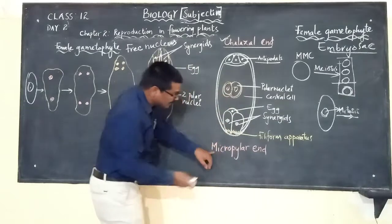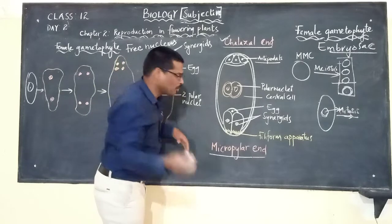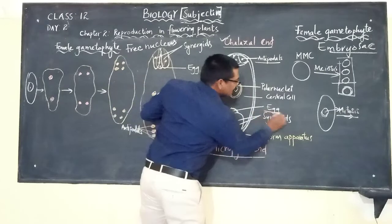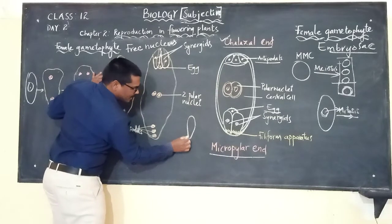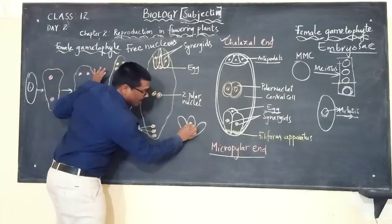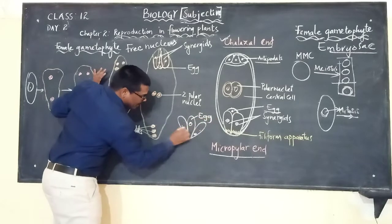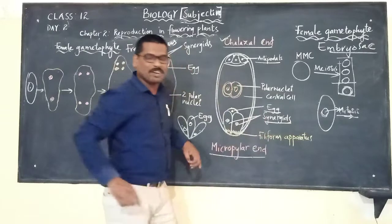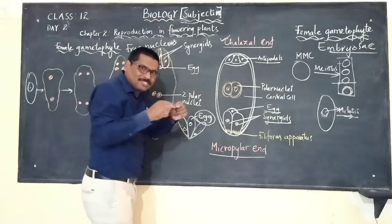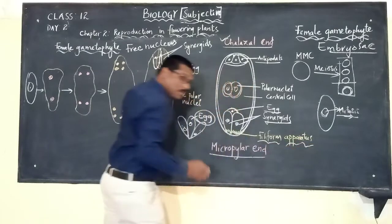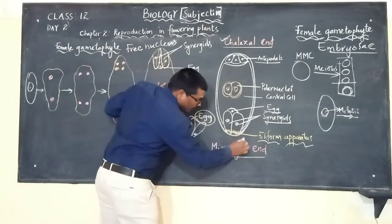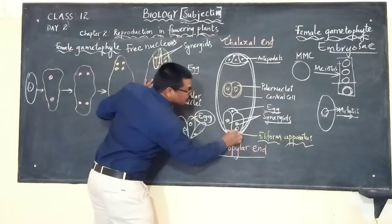Another three cells enclosed by cell walls are present at the micropylar end. Among these three, the egg is present at the center, and the two cells towards the sides are called synergids. The synergids have a beak-like structure called the filiform apparatus, which directs the pollen tube into the synergids.